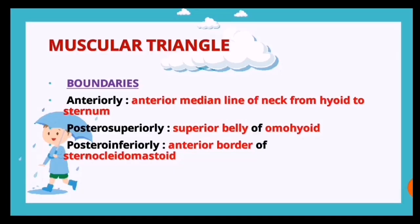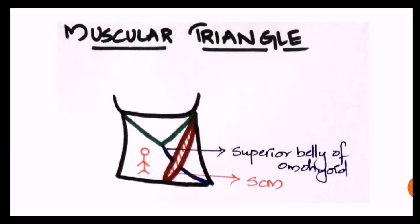The last triangle is the muscular triangle. Its boundaries are: anteriorly the anterior midline of the neck from the hyoid to the sternum, postero-superiorly the superior belly of omohyoid, and postero-inferiorly the anterior border of the sternocleidomastoid muscle.